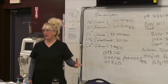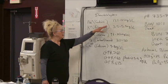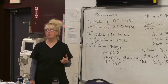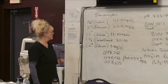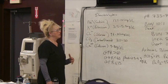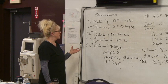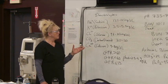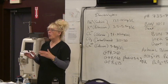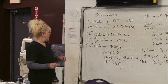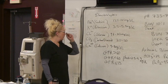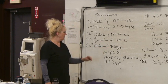Sodium's typical value is 135 to 145 milligrams per deciliter. Potassium is between 3.5 and 5.5 milligrams per deciliter. Chloride is about 98 to 103 milligrams per deciliter. Depending on the hospital and literature, these may be off by one or two points. CO2, carbon dioxide, is 20 to 30, and calcium is 9 to 11 milligrams per deciliter.